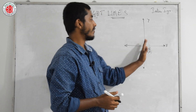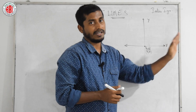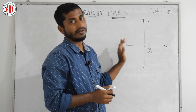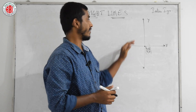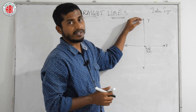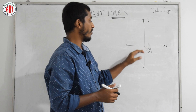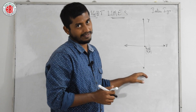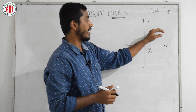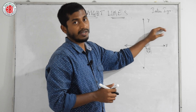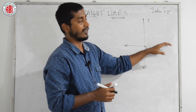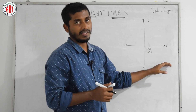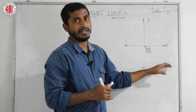From the origin, going towards the right is the positive x-axis; going to the left is the negative x-axis. Moving upwards is the positive y-axis; moving downwards is the negative y-axis. Based on that, the first quadrant has both x and y as positive coordinates. Similarly, the remaining quadrants are defined based on their coordinate axes.